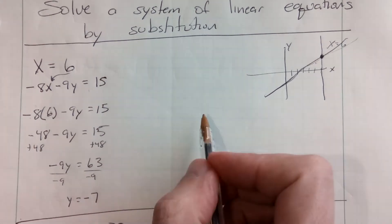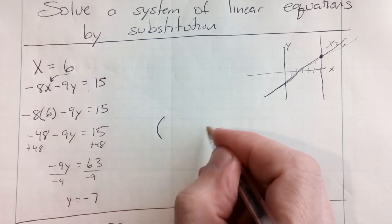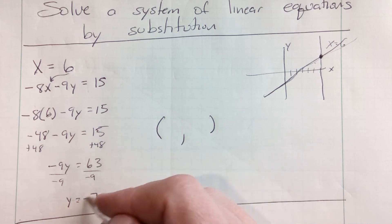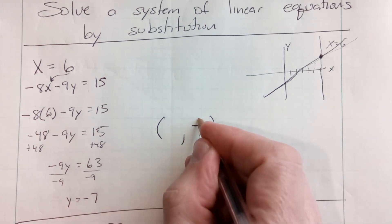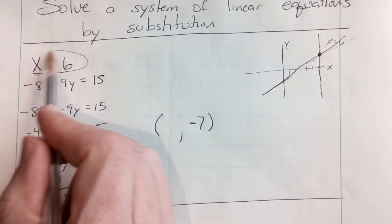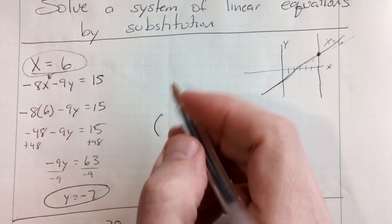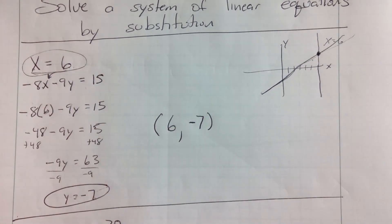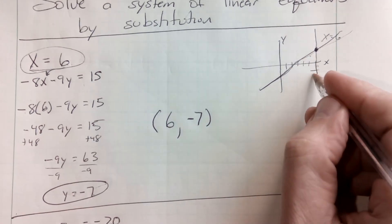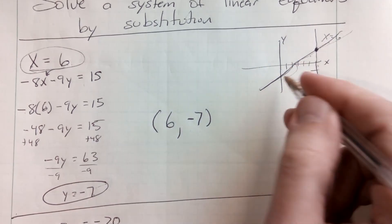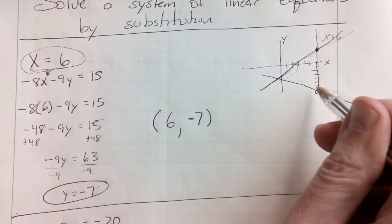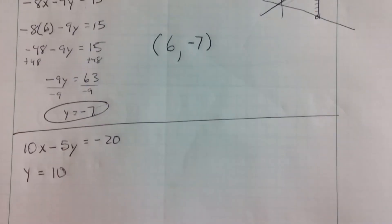The solution, remember, is always a point — it's always an x value and a y value. I just found the y value; it's negative 7. But the first equation gave me the x value: x is 6. So there's my solution, the point (6, -7). I was over 6 and actually down 7, so I drew my line completely in the wrong place. Let's do another one.